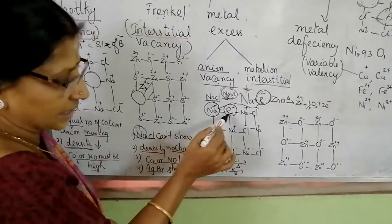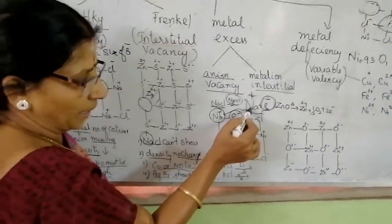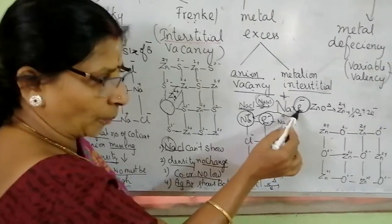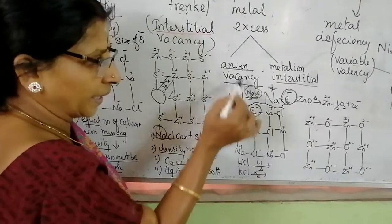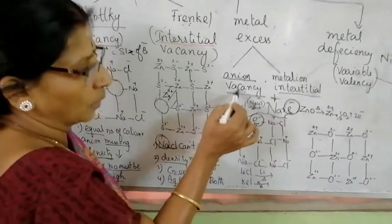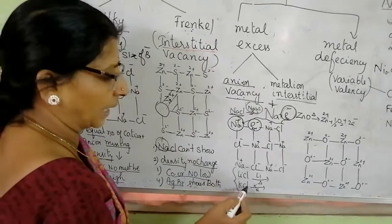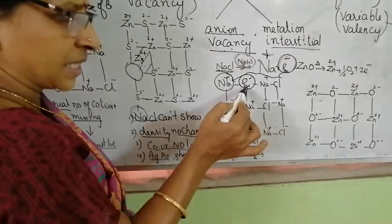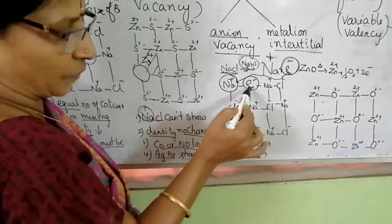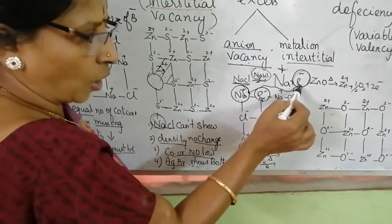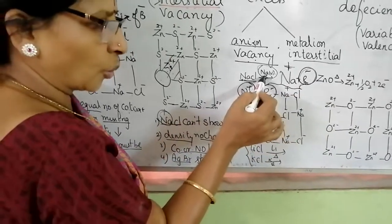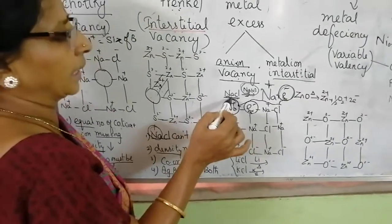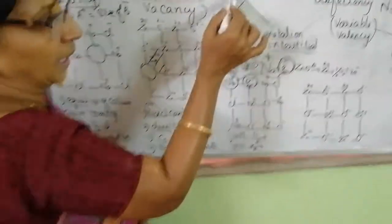Electrical neutrality is maintained. The electron produced during ionization occupies the anion space — anion is vacant. Anion vacancy is occupied by the unpaired electron produced during the ionization of the alkali metal atom when it is heated with its own metal vapor. This is called metal excess defect.